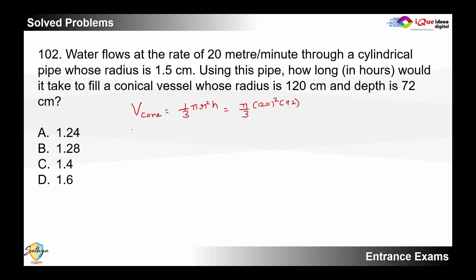Now the amount of water which is flowing through the pipe per hour is equal to pi r square h where r is the radius and h is the height or the length of the pipe. So in this case pi into the radius is 1.5, so 15 upon 10 the whole square multiplied by 20 meters per minute.